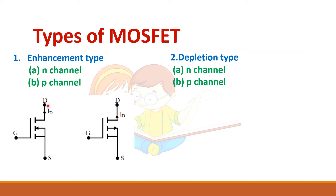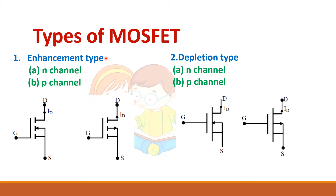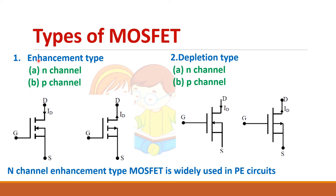This is a drain terminal. This is a source terminal and the center part is called the body of the MOSFET, and that will be shorted to the source. The name enhancement comes from that — if you give the gate-source voltage and the drain current increases, that is called enhancement type MOSFET. In depletion type MOSFET, when we apply the gate-source voltage the drain current decreases. Only this enhancement type MOSFET, and that too N channel MOSFET, is preferred in power electronic circuits; the depletion type doesn't find any application in power electronic circuits.